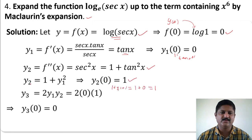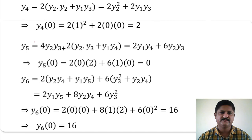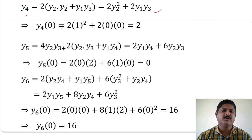Differentiate y2 with respect to x: y3 equals the differentiation of 1 plus y1 squared, which gives 2y1 into y2. Therefore y3(0) equals 2 into y1(0) into y2(0) equals 2 into 0 into 1 equals 0. Now y4 equals differentiating y3, using the above values: y4(0) equals 2 into y2(0) squared plus 2 into y1(0) into y3(0) equals 2 into 1 squared plus 2 into 0 plus 0, therefore y4(0) equals 2.